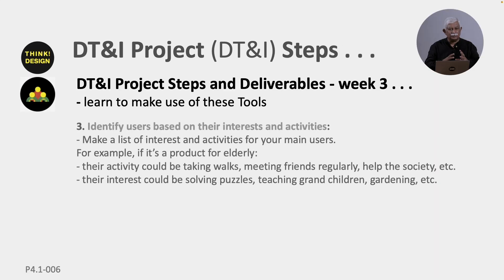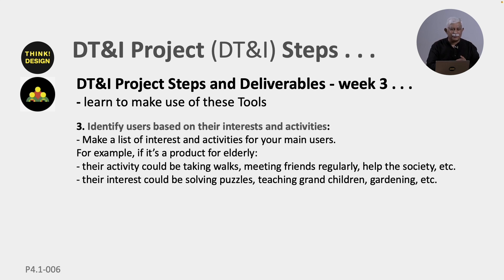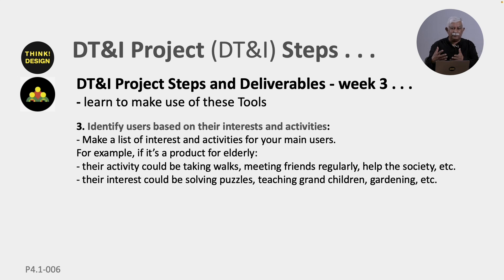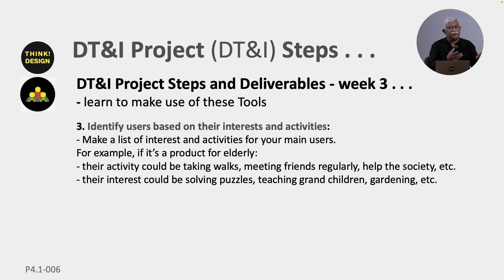Then you go on to identifying users based on their interest and activities. Make a list of the activities of your main user. For example, if it is a product for the elderly, their activities could be walking, meeting friends regularly, helping the society. Their interest could be solving puzzles, teaching their grandchildren, gardening, etcetera.